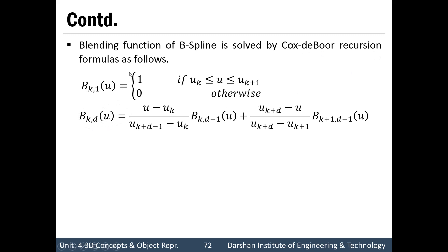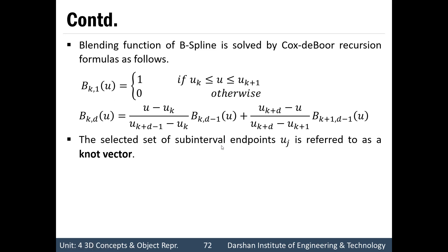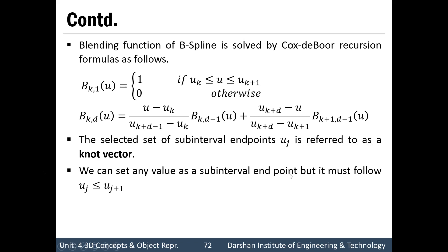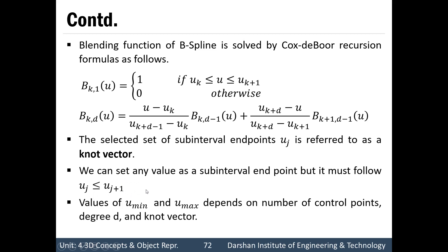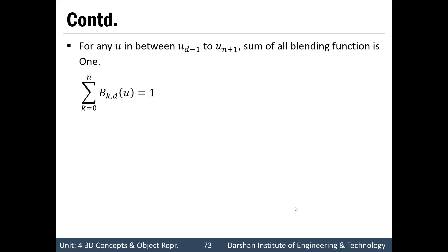The selected set of sub-interval endpoints uj is referred to as a knot vector. Whatever values of uj we use over the range, that range is referred to as knot vectors, and individual values are referred to as knot values. We can set any values as sub-interval endpoints, but they must follow uj less than or equal to uj plus 1 — meaning a previous value must be less than or equal to the next value. For any u between u_{d-1} and u_{n+1}, the sum of all blending functions equals 1, i.e., summation k equals 0 to n of Bk,d(u) equals 1. There are three general classifications for knot vectors: uniform, open uniform, and non-uniform.